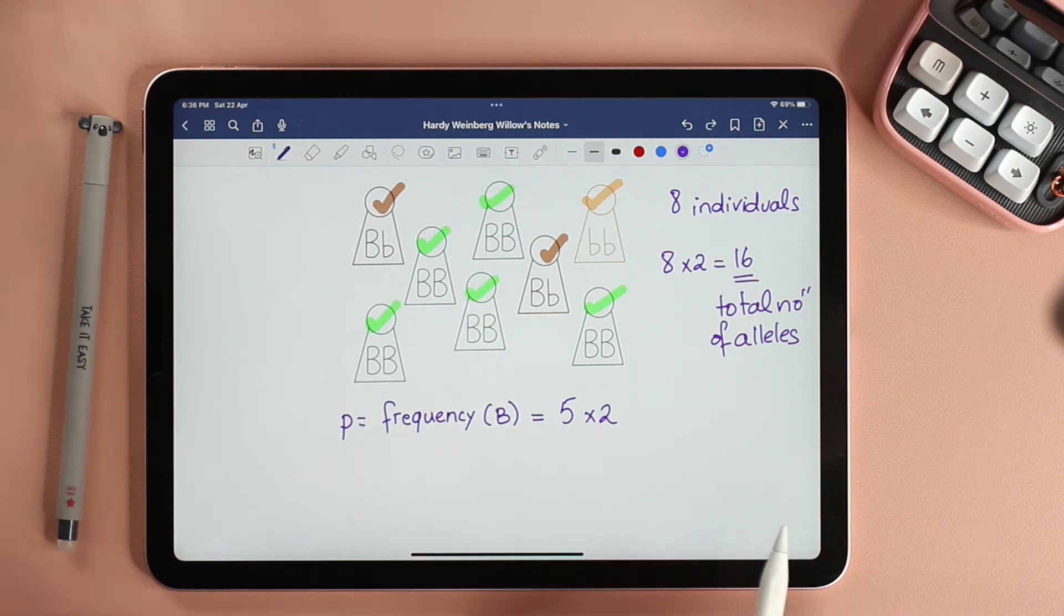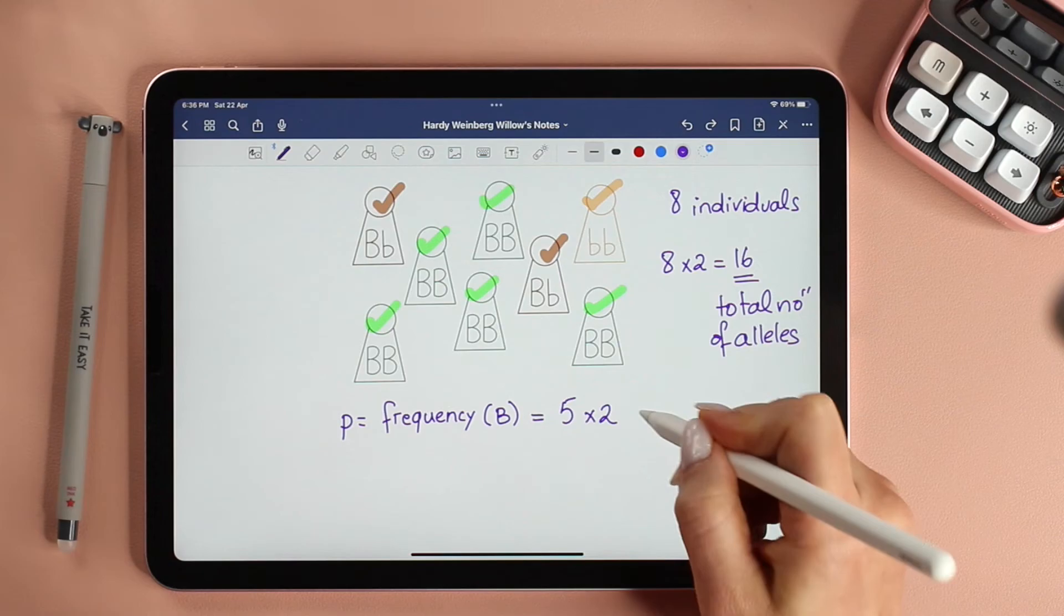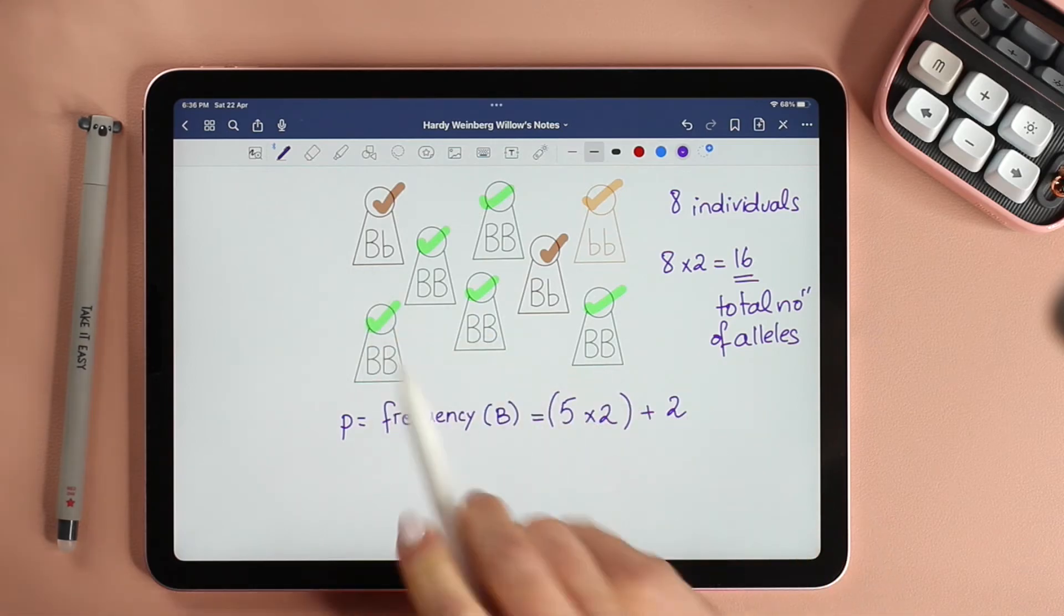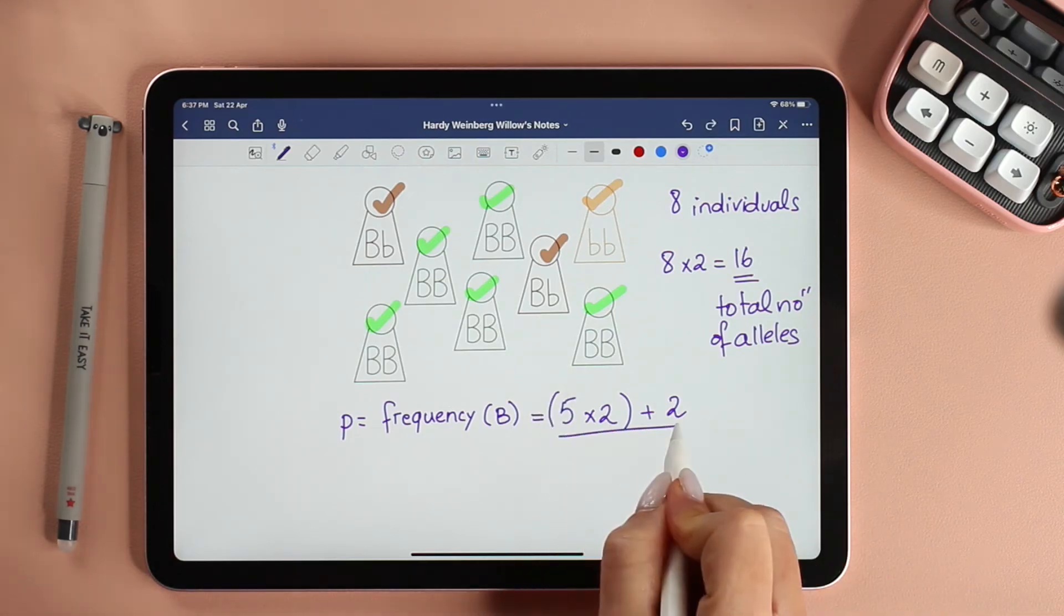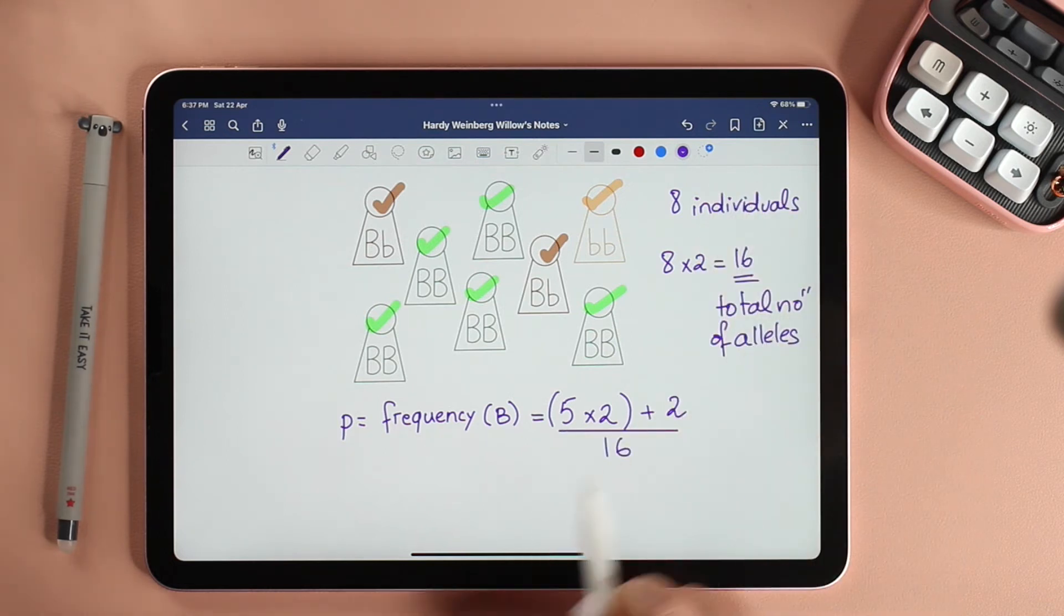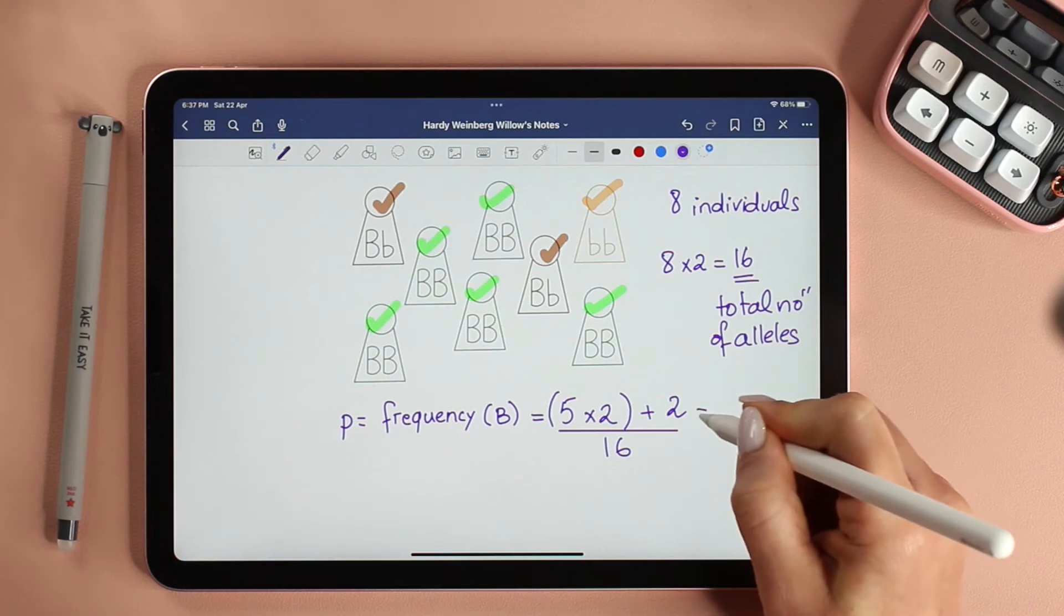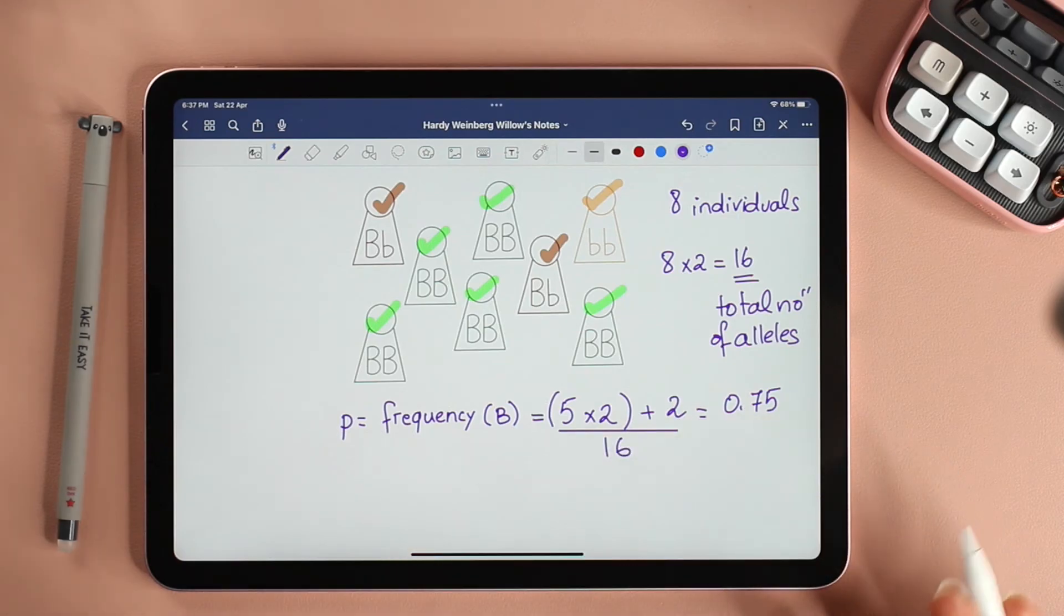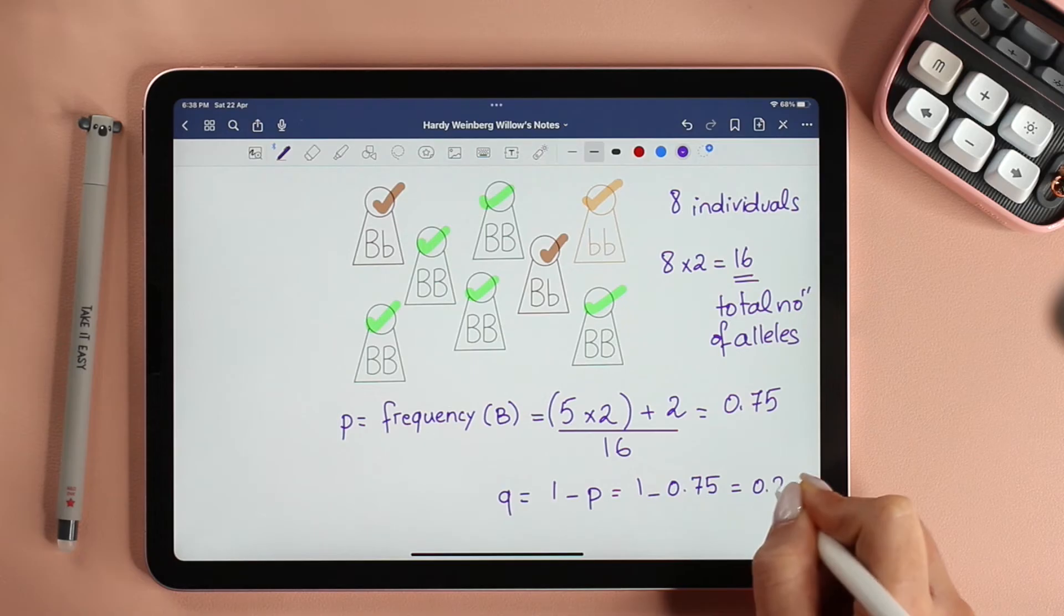So if I want to calculate the frequency of allele B, all these five individuals have allele B. So I'm going to write 5 because of the five individuals, times 2. Why? Because each individual has two alleles, and specifically these five have two alleles, both dominant. But we don't stop there, because not only these green individuals have the dominant allele B, the brown also have the dominant allele. And how many browns do we have? Two, so to this number we're going to add two. Why I don't multiply this two by two? Because these individuals have one copy of the dominant allele. Finally, we have to divide this number by the total number of alleles, which is 16. Remember, p is a frequency, we have to divide it by the total number of alleles. And here we're going to get a value of 0.75.